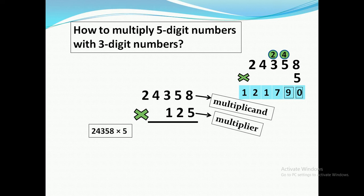Five threes are fifteen, we add two to get seventeen — we write seven down and carry one to the next digit. Five fours are twenty, we add one to get twenty-one — we write one down and carry two to the next digit. Five twos are ten, we add two to get twelve, and we write this amount down.